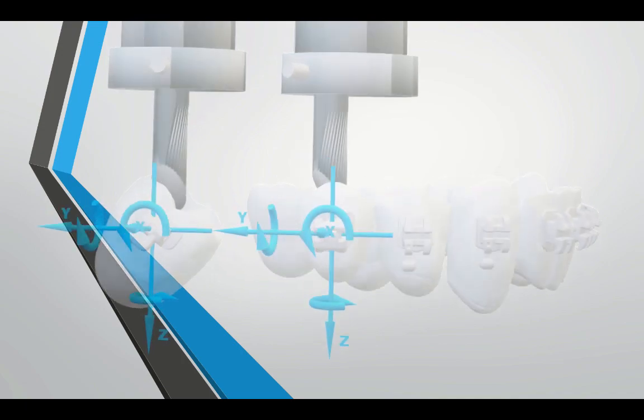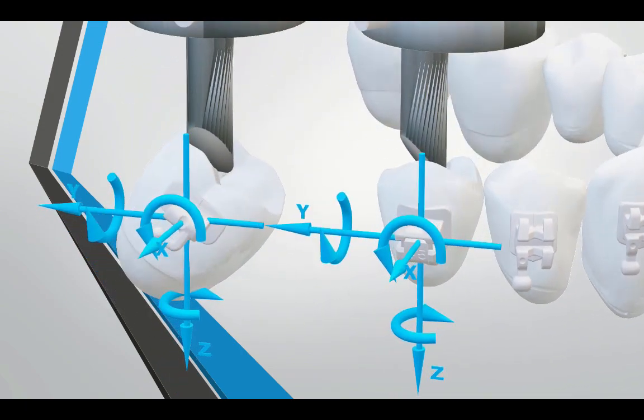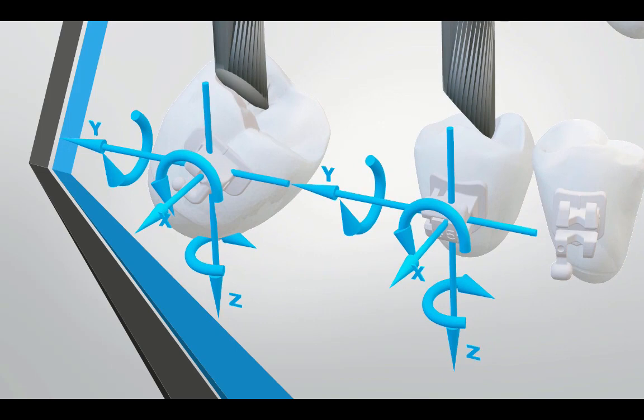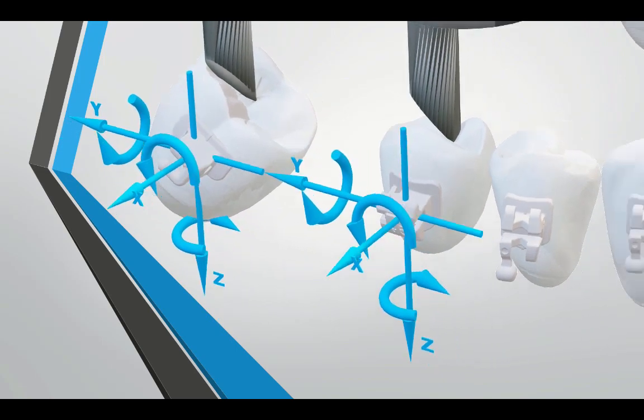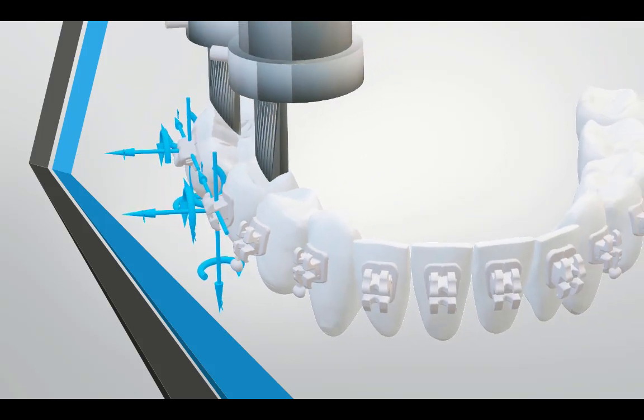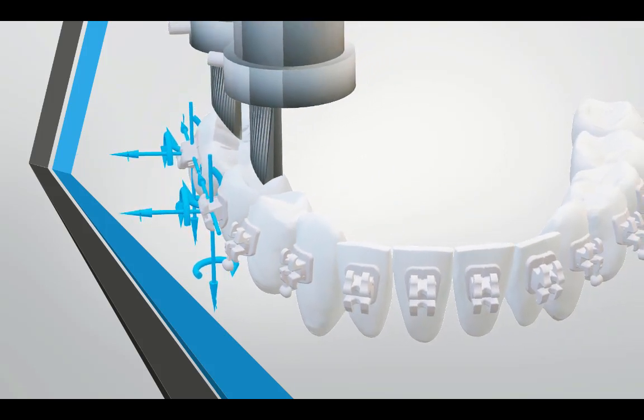Then, we registered the vertical forces and tipping moments produced by a 0.016 by 0.022 inch nickel-titanium wire at the second molar tube and at the second premolar bracket in five distinct clinical situations.